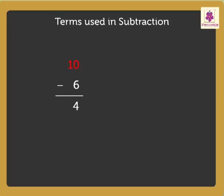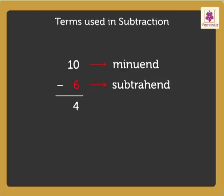The number from which another number is subtracted is called the minuend. The number that is subtracted is called the subtrahend, and the answer we get after subtraction is called the difference.